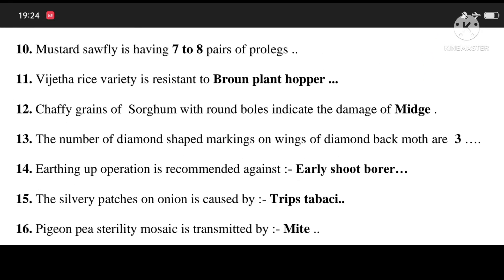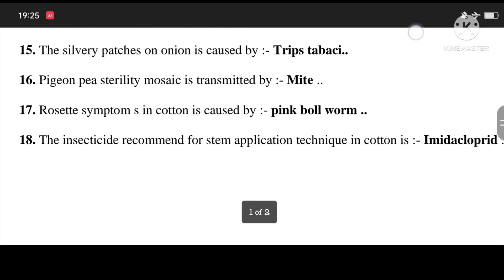12. Chaffy grains of sorghum with round balls indicated the damage of the mite. 13. The number of diamond-shaped markings on wings of diamond-backed moth are 3. 14. Earthing-up operation is recommended against sugarcane shoot borer. 15. The silvery patches on onion is caused by thrips. 16. Pigeon pea sterility mosaic virus is transmitted by mite.